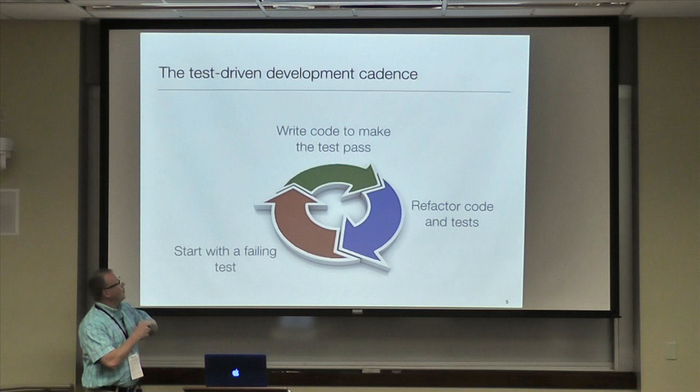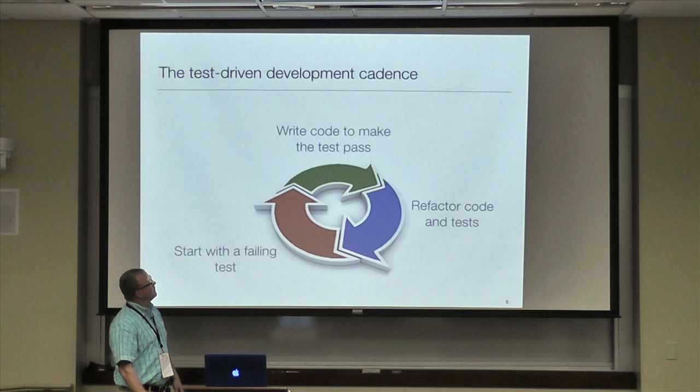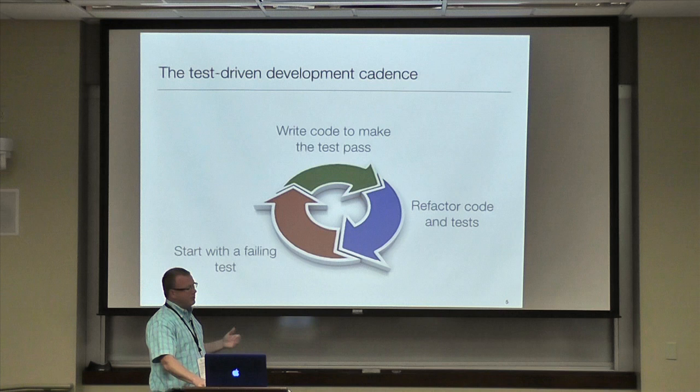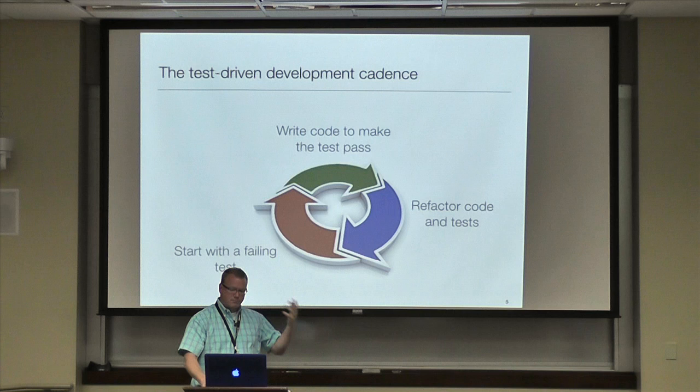Everyone's probably seen the red-green-clean continuum. Write that failing test first, make sure you have good messages, write the code to make the test pass, and then refactor your code and your tests — because your tests often have duplication in them. DRY them up, that sort of thing.